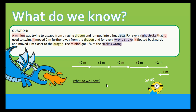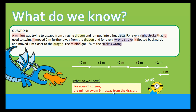So what do we know from here? For every 6 strokes the minion takes, it travels a net distance of 9 meters away from the dragon. How do we get that? We take 2 + 2 + 2 + 2 + 2 = 10 meters forward, then subtract 1 meter for the wrong stroke: 10 − 1 = 9 meters.